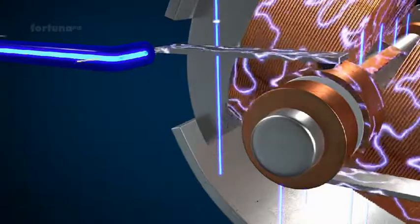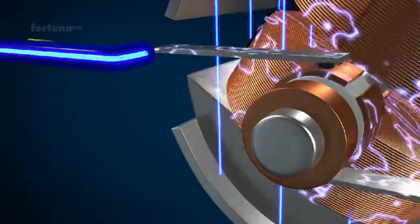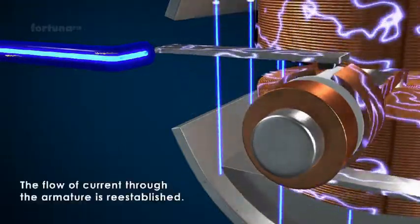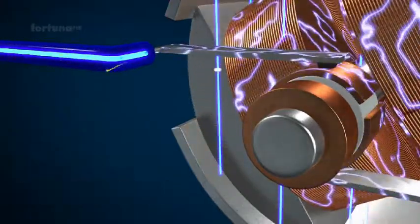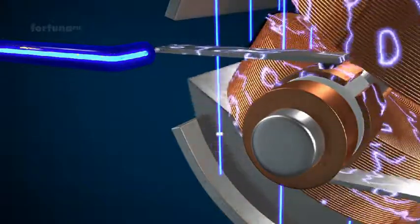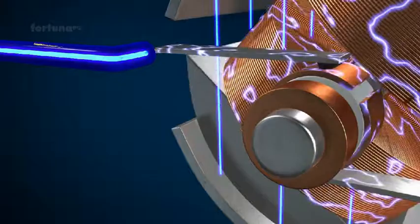Along with it, the commutators will also rotate. As the commutators once again come into contact with the brushes, the flow of current through the armature is re-established, causing a magnetic field with the same polarity to be regenerated and allowing the armature to continue rotating in the same direction.